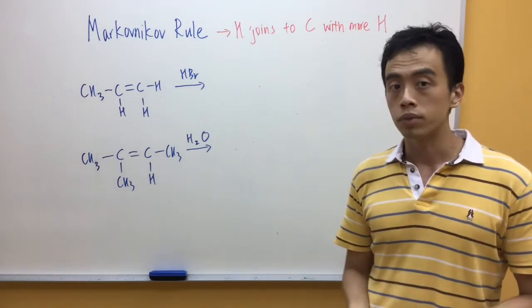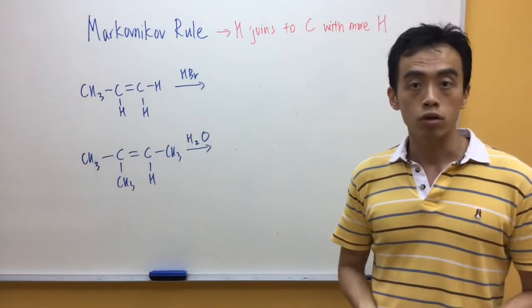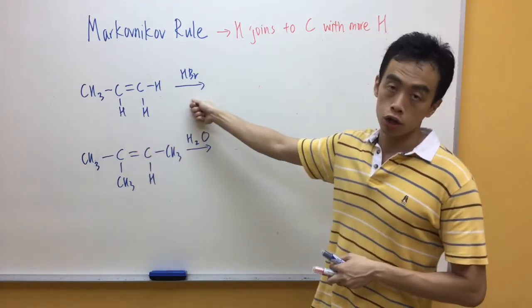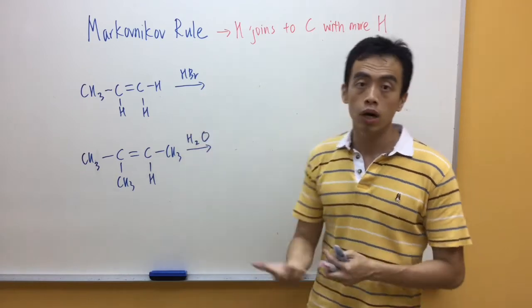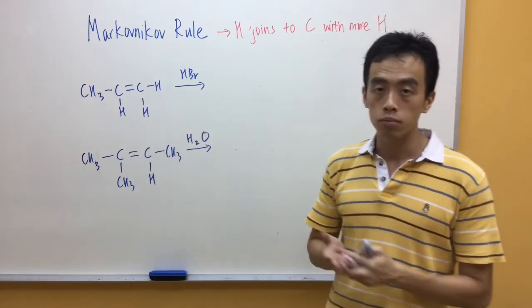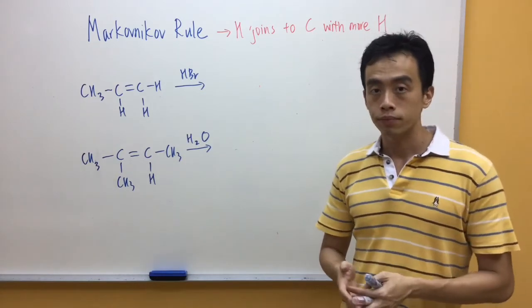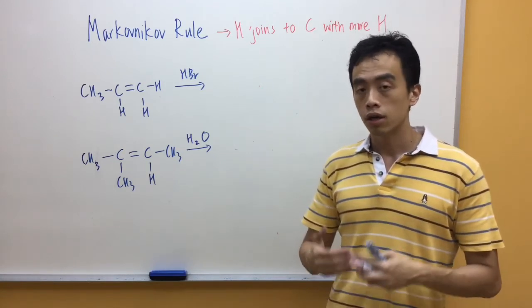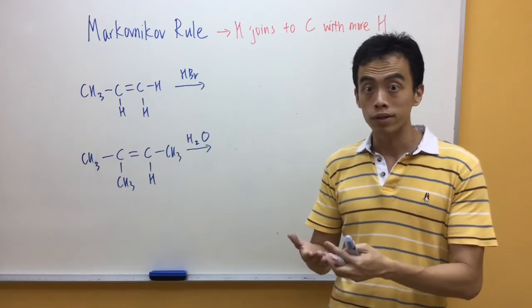Let's take a look at these two examples for us to apply Markovnikov rule. Now for the first example, we have this alkene, adding HBr. So basically what I'm doing is I'm adding a hydrogen and a bromine to my alkene. Now in order for us to decide which carbon has more hydrogen, one very simple way is I box up my C=C.